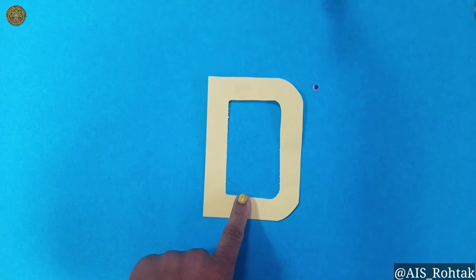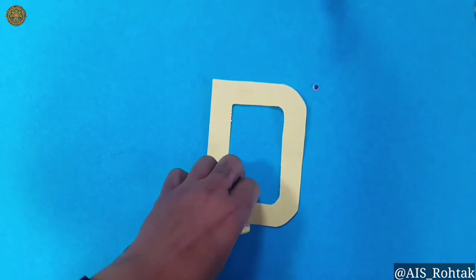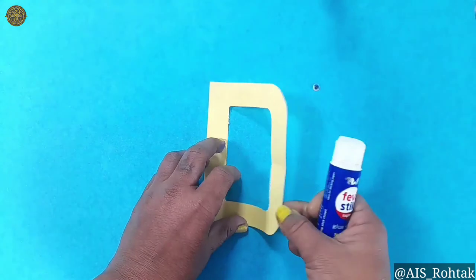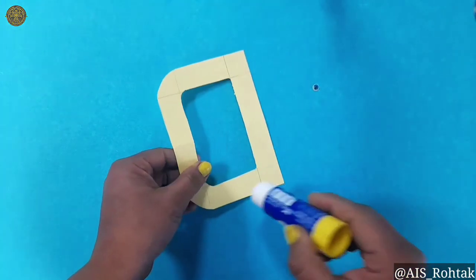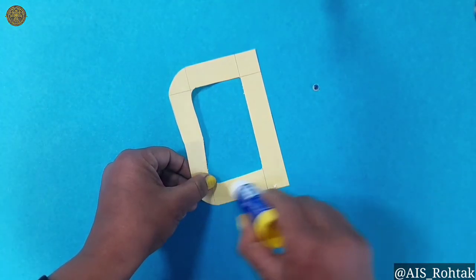First of all, take the cut out of letter D, then apply glue stick at the bottom of the letter D cut out.